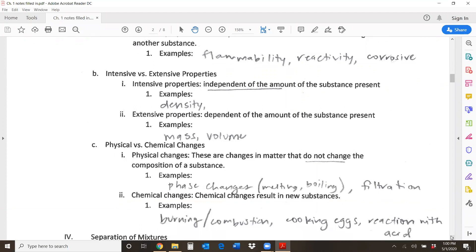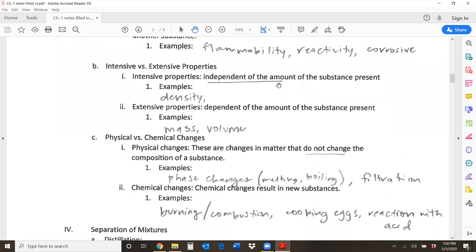Intensive and extensive properties. Intensive is independent of the amount of the substance. So one good example of this is density, because no matter how much of a substance you have, it'll still have the same mass to volume ratio. Extensive properties, however, depend on the amount of a substance. So mass or volume. The more you have, the more mass you'll have, the more volume you'll have. But the ratio, which is density, that will stay constant.